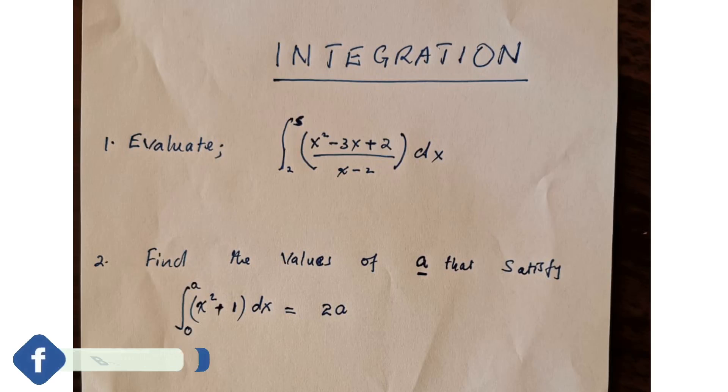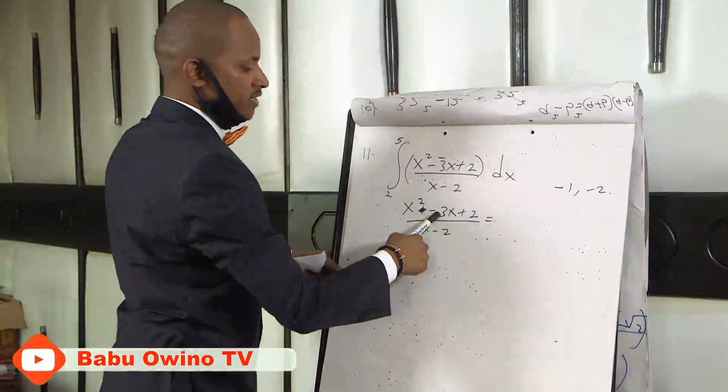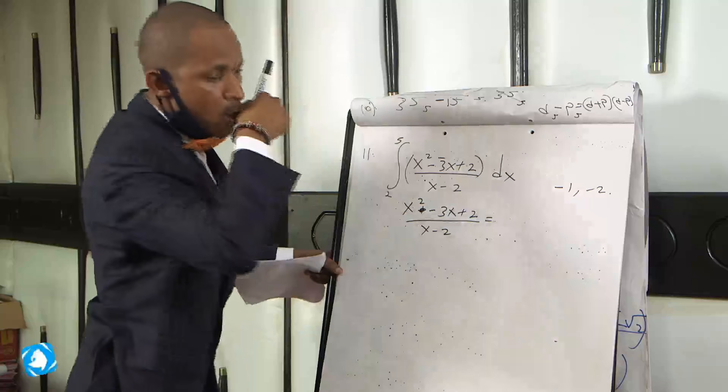Before you start integration, you simplify what is in the bracket. We can see a quadratic expression, so the quadratic expression can be simplified by writing x squared minus 3x plus 2 divided by x minus 2. Look for two numbers: if you multiply them gives you positive 2, if you add them gives you negative 3. So the two numbers are negative 1 and negative 2. When you add these two numbers gives you negative 3, but when you multiply them gives you positive 2.